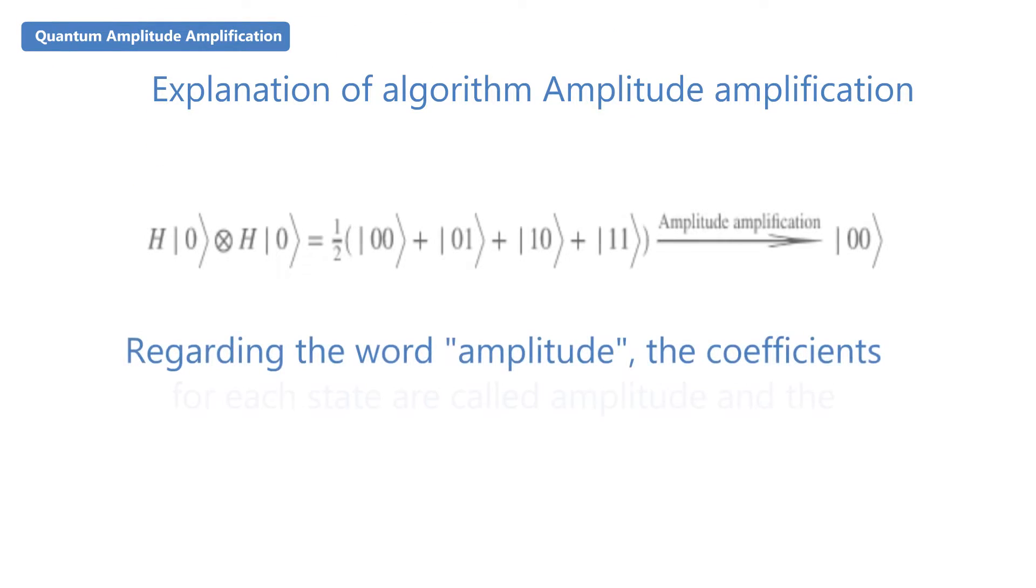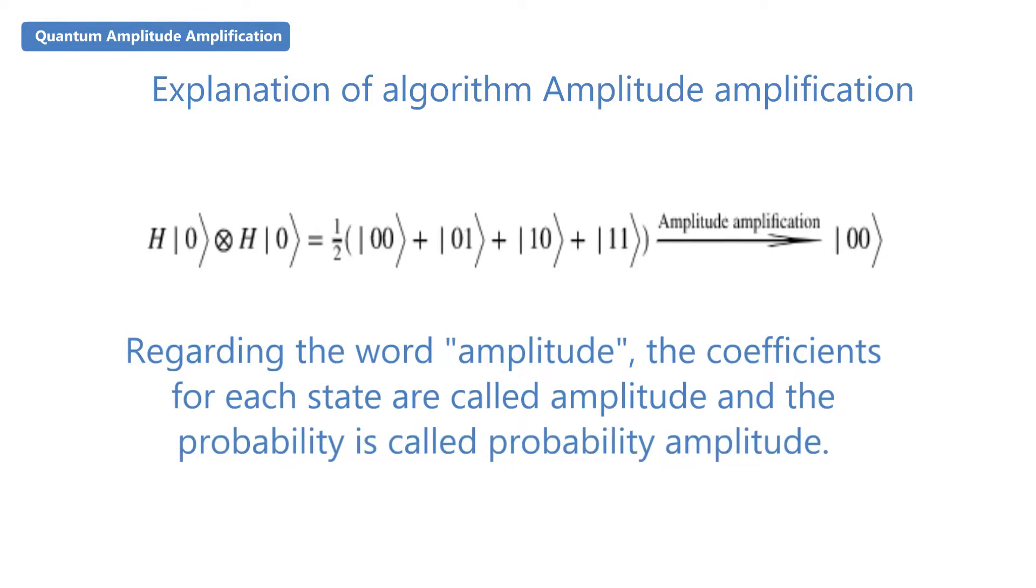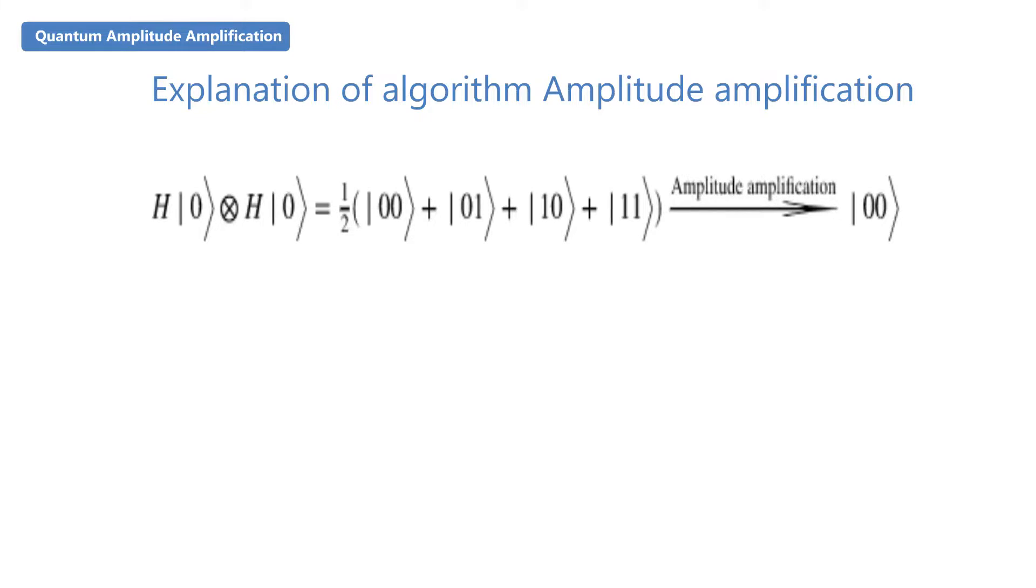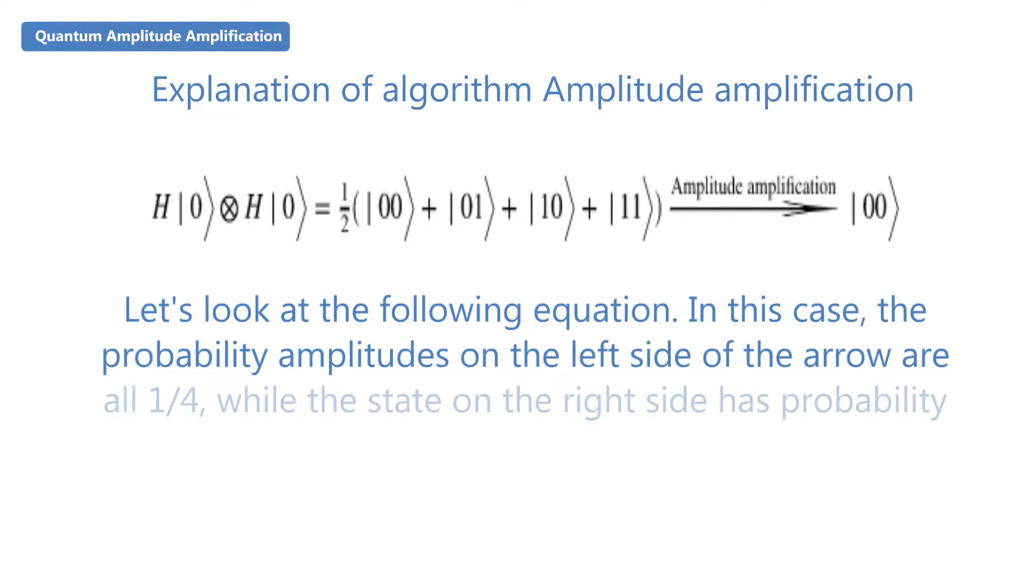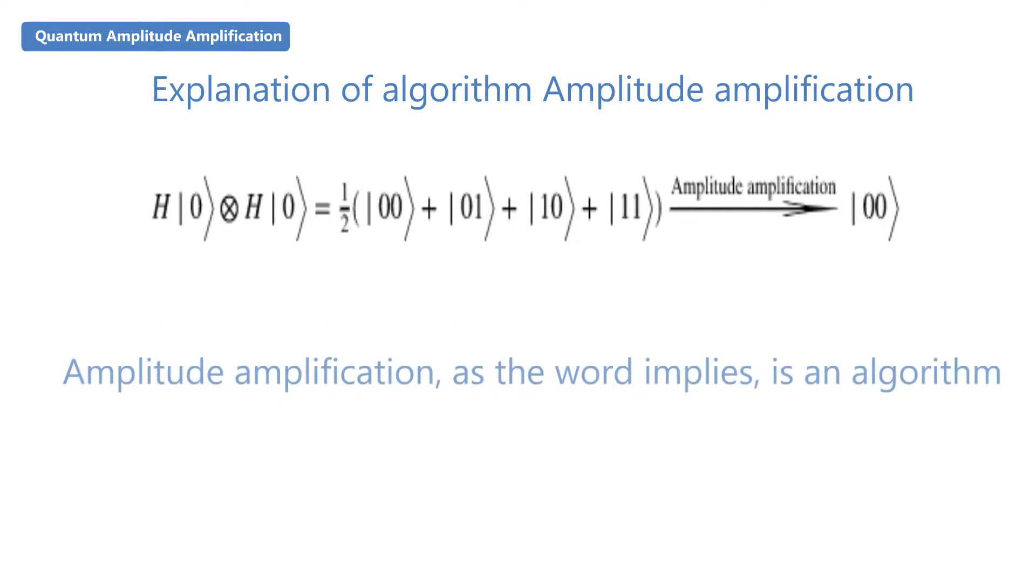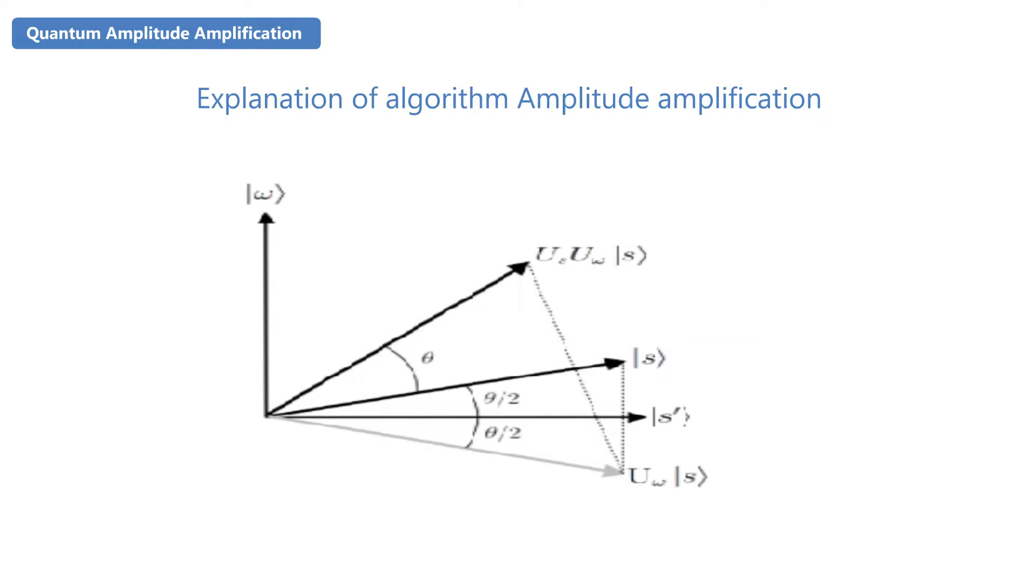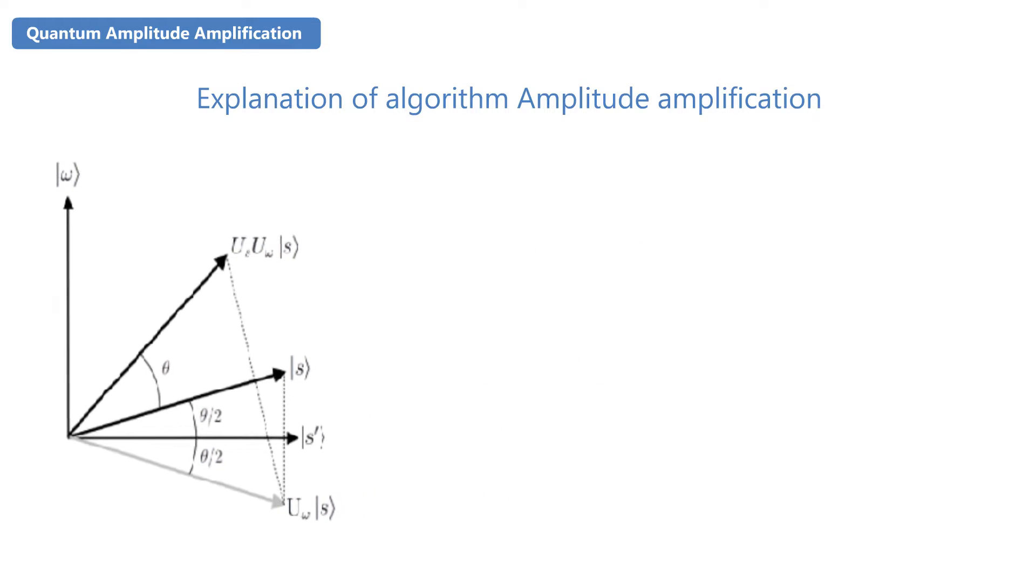Regarding the word amplitude, the coefficients for each state are called amplitude and the probability is called probability amplitude. Let's look at the following equation. In this case, the probability amplitudes on the left side of the arrow are all one quarter, while the state on the right side has probability amplitude 1 for zero zero. Amplitude amplification, as the word implies, is an algorithm that amplifies this probability amplitude. The following figure illustrates the calculations.